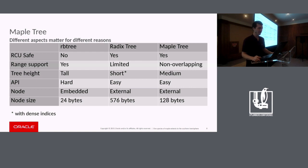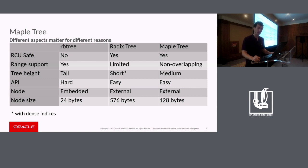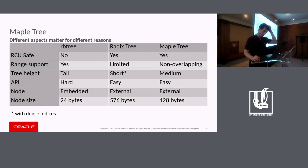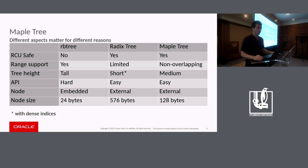To give an example of the height of the trees: if we had a million entries, with the radix tree at dense indices, the radix would be four high, the rbtree would be 18 high, and the maple tree would be seven. That's because we have a branching factor of eight on each level — eight right now, anyway.